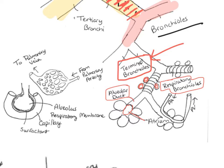Blood vessels surround all these alveoli. The pulmonary artery comes from the right ventricle and keeps branching into little capillaries, bringing deoxygenated blood from the right side of the heart. At the alveoli, the blood picks up oxygen, and then it returns to the heart with oxygenated blood through the pulmonary veins. Where the capillary meets the alveolus, we call that the respiratory membrane.